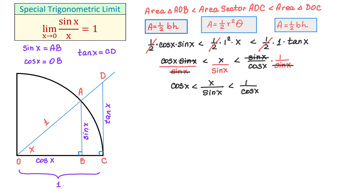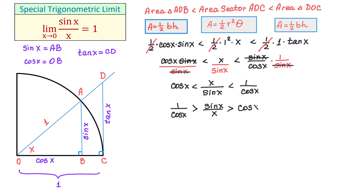In the middle we have x over sine(x), but we need sine(x) over x. To get sine(x) over x we take the reciprocal of each expression and reverse the inequality symbols. So on the left we have 1 over cosine(x), in the middle sine(x) over x, and on the right cosine(x). Now in the middle we have sine(x) over x just like we needed.